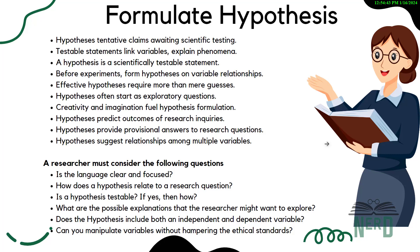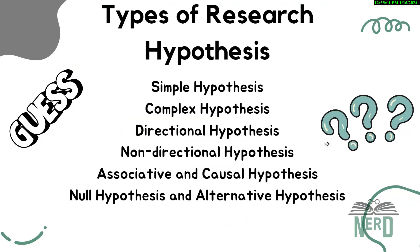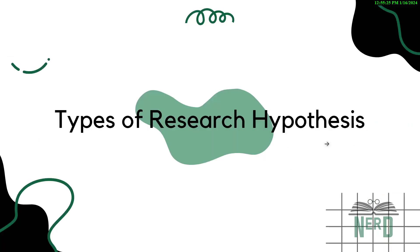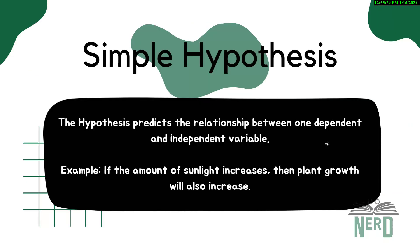There are types of research hypotheses. As you can see on screen, we have six types: simple hypothesis, complex hypothesis, directional, non-directional, associative, and causal. At the end, we'll also talk about null hypothesis and alternative hypothesis. So let's begin with the first one — simple hypothesis.